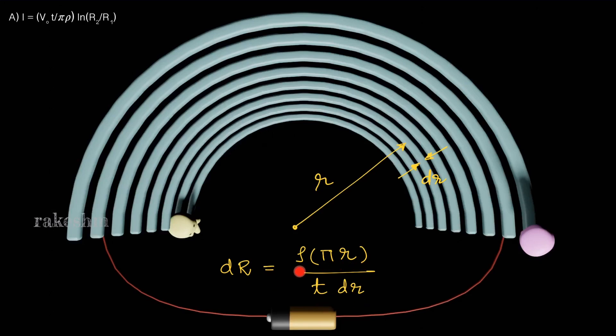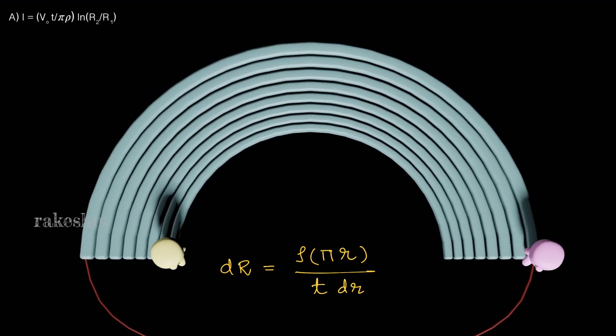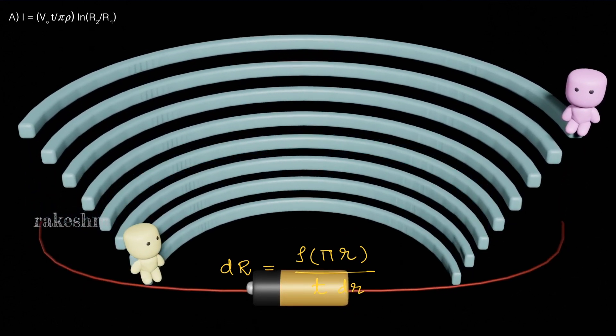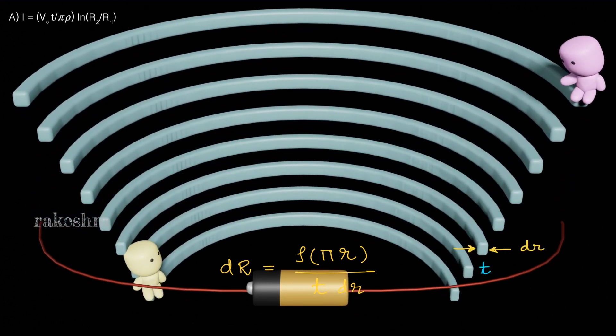The resistance dR equals rho times l over area. The length of this piece is pi times r, the width is dr, and the thickness is t, so the area is t times dr. Therefore dR equals rho·pi·r divided by (t·dr).